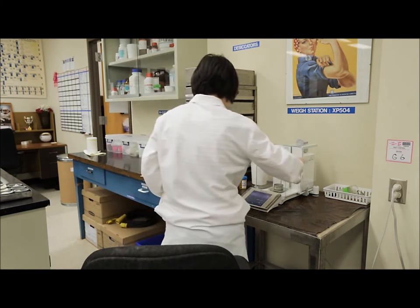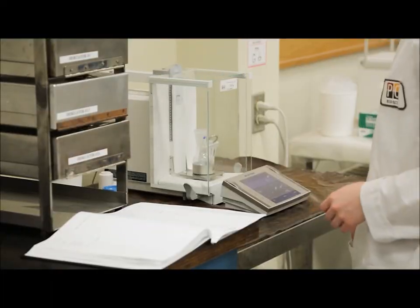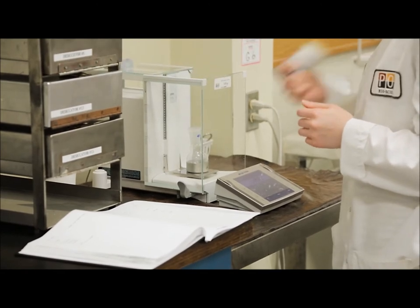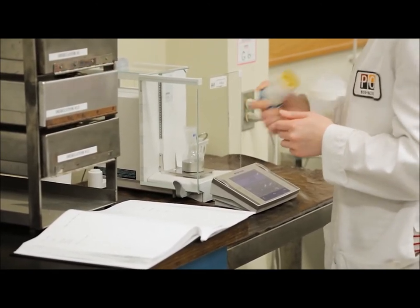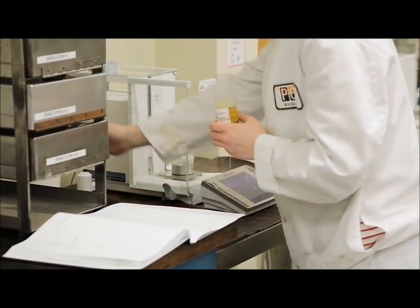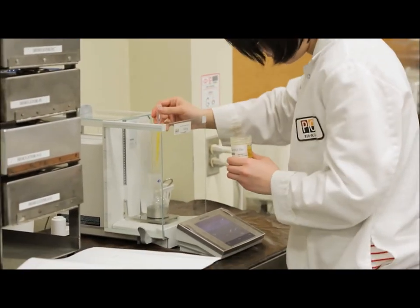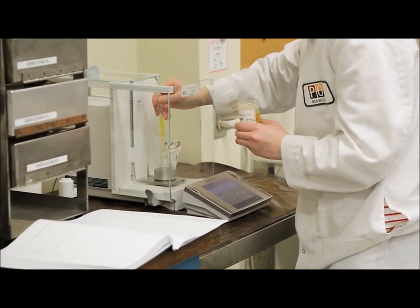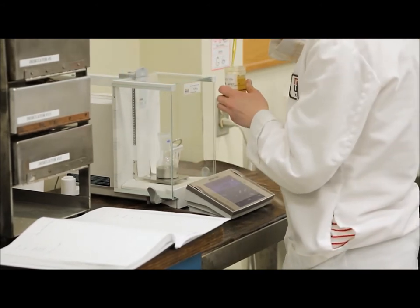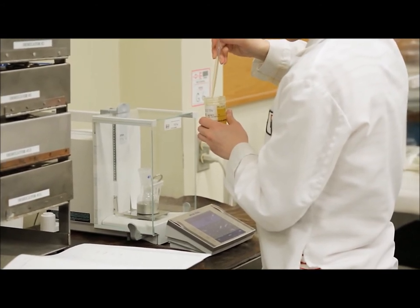When starting the fatty acid composition analysis, the first thing we do is subsample our sample and weigh it into a round bottom boiling flask. It is critical at this point that the sample is mixed well because you want to be subsampling from a sample that is homogeneous and uniform throughout. We weigh approximately 0.1 grams into the round bottom boiling flask and this sample weight is recorded.